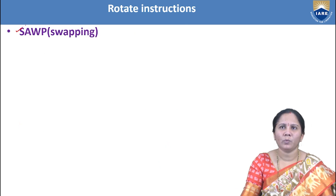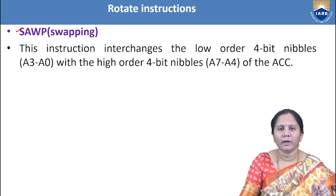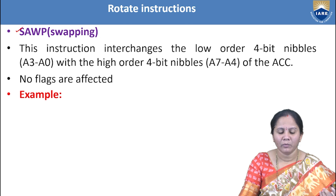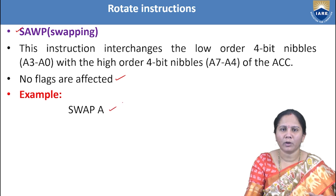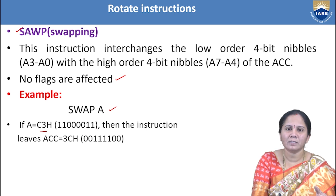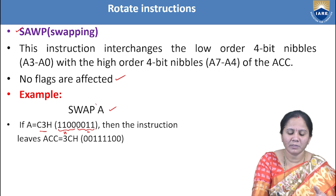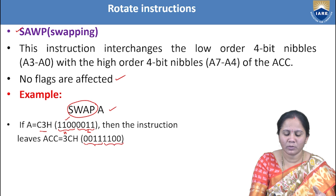The SWAP instruction swaps the lower nibble (bits 0-3) and higher nibble (bits 4-7) of the 8-bit data in the accumulator. Flags are not affected. The general format is SWAP A. For example, with A = C3H (binary 11000011), the lower nibble 0011 swaps with the higher nibble 1100, resulting in 00111100 in the accumulator. Thank you — like, share, subscribe, and hit the bell icon for more updates.